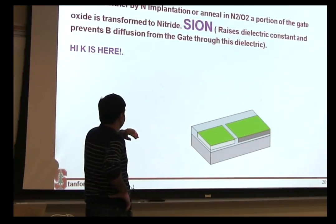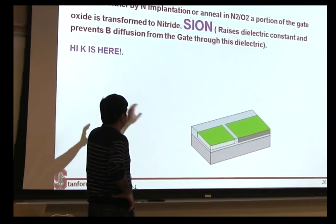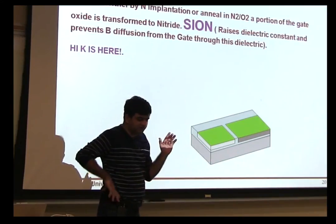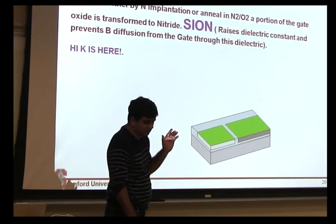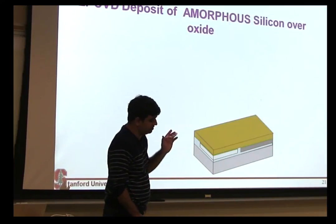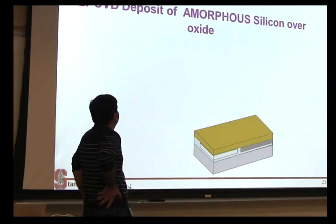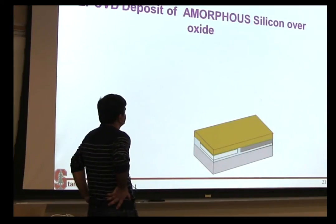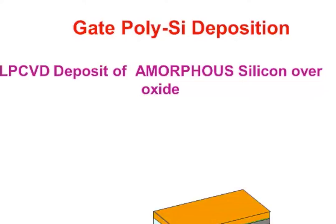If you're doing a gate first process, then you deposit high-K over here. If you're doing a gate last process, you move on, and then you deposit your polysilicon gate. So this is an amorphous polysilicon gate — a blanket deposition across your wafer.